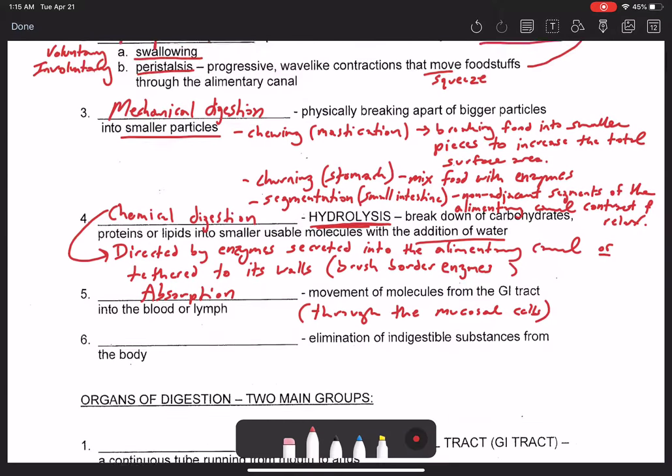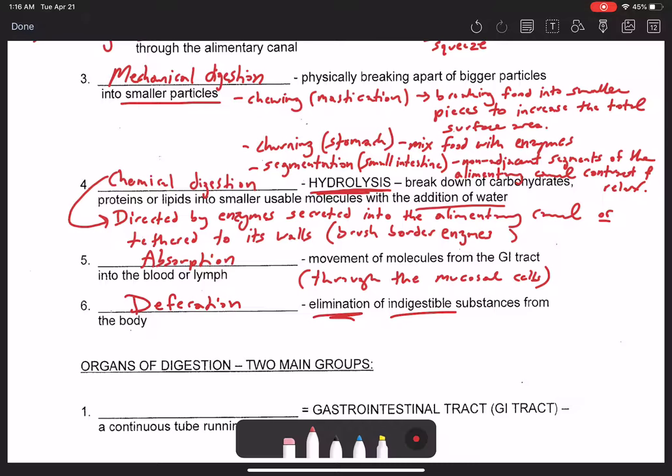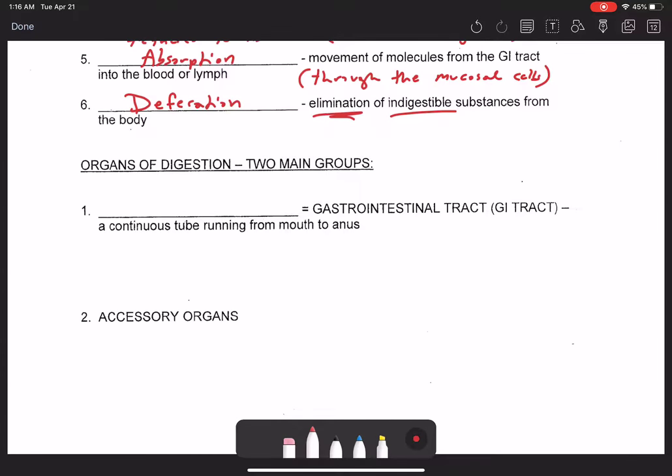And then finally, the final process of digestion that we want to talk about is defecation. And this is just the final elimination of the indigestible or non-digestible substances from the body. So now let's talk about the major classification of the two different types of organs we find within the digestive system.